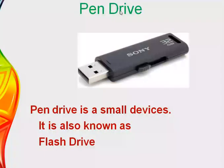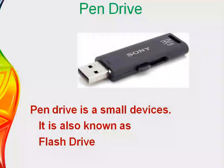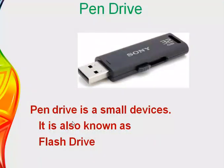Pen drive is a small device also known as flash drive. It is very easy to carry, just like a pen — we can even put it in our pocket. A Sony pen drive has a maximum capacity of 32 GB (gigabyte). Another name for a pen drive is Memorystick or USB. Pen drive, flash drive, Memorystick, and USB are all the same thing. It is very portable, almost the same shape as a pen, and some pen drives have a cap.